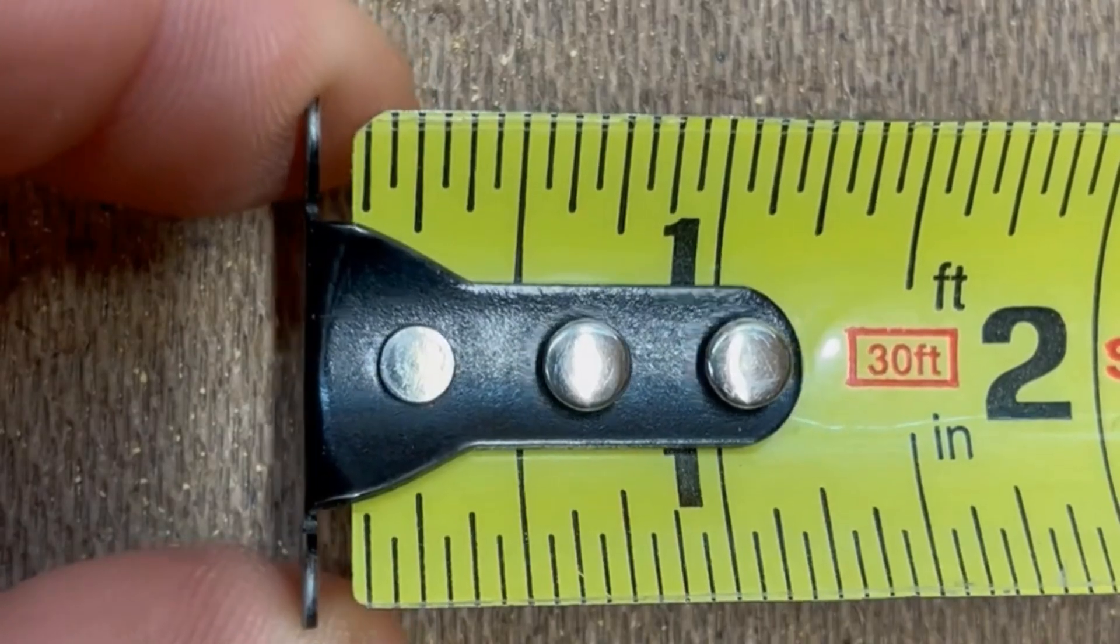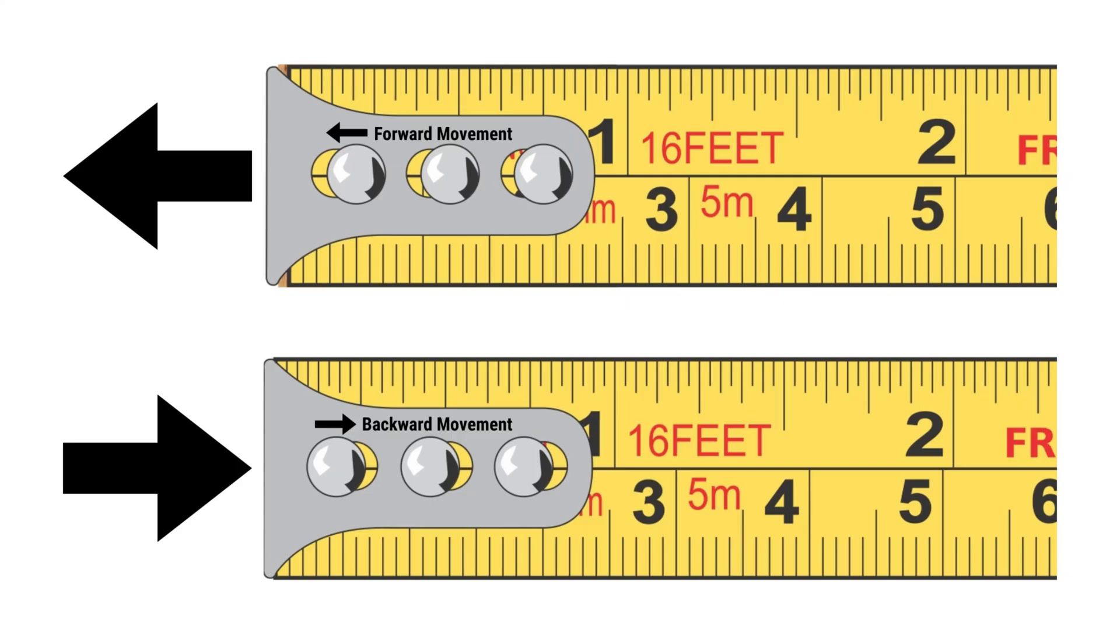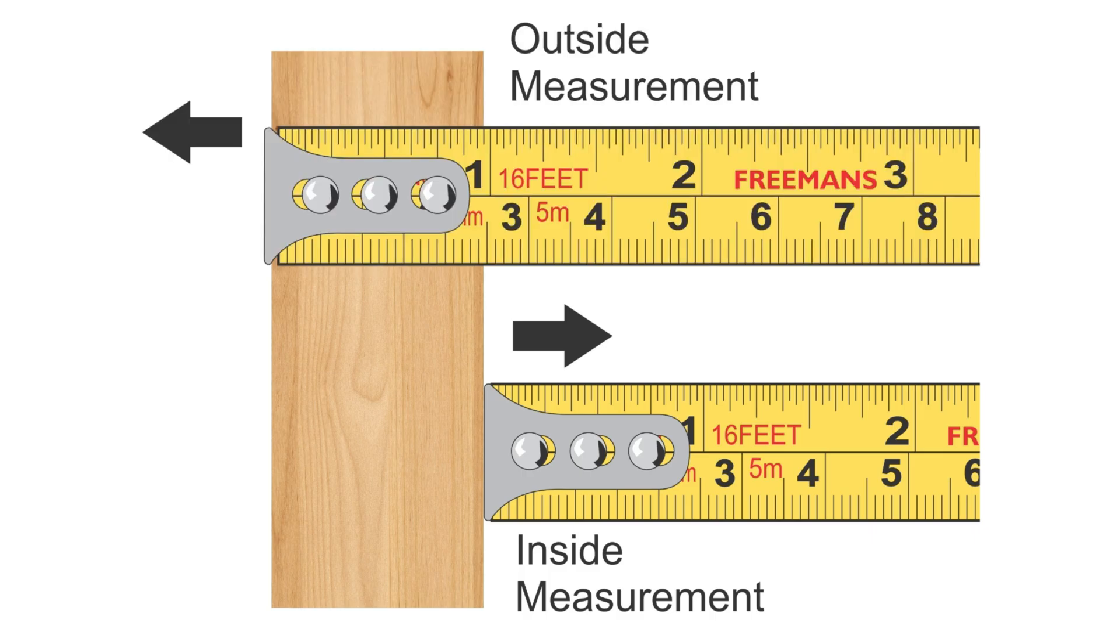You might notice that the hook at the end of your tape measure feels slightly loose. This movement is intentional and compensates for the thickness of the hook. This design ensures accurate measurements, whether you are pressing the tape against a surface or hooking it onto an edge.